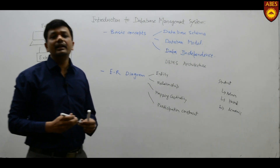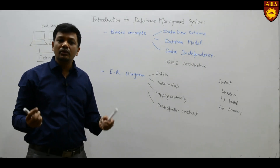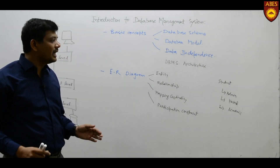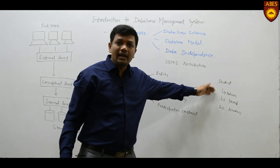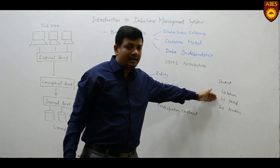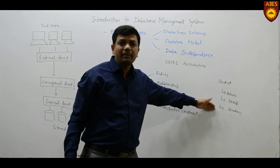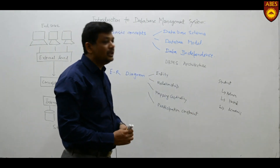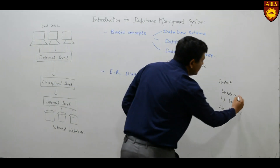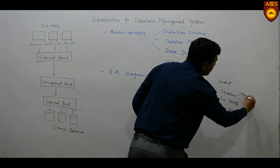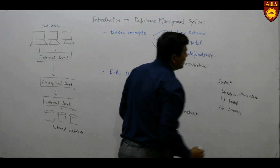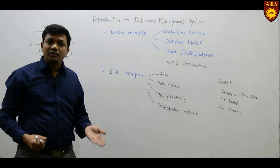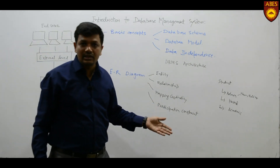These three different applications may each need to store your information. In the file system approach, admin may require certain details, hostel may require certain details, and academics may require certain details. Some details will be common across all of them — for example, your name and roll number are common to all applications, and your phone number or contact number are also attributes common to all three applications.